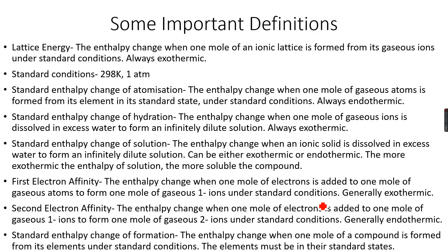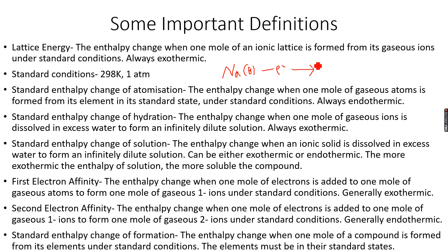Ionization energy involves removing one mole of electrons from gaseous atoms. The first ionization energy is removing one mole of electrons from gaseous atoms. If I had to write an equation representing the ionization energy of sodium, it would be Na(g) minus one mole of electrons — because we are removing electrons. In electron affinity we are adding electrons, but in ionization energy we are removing them.